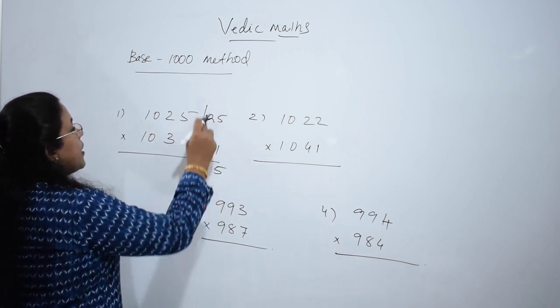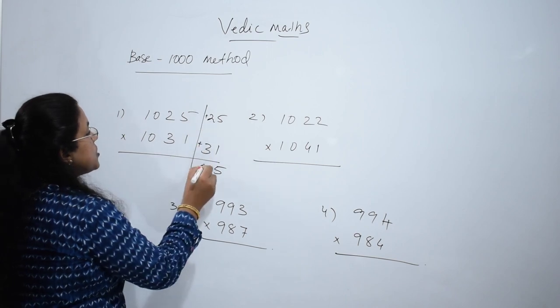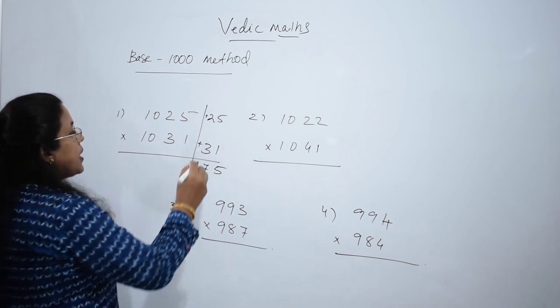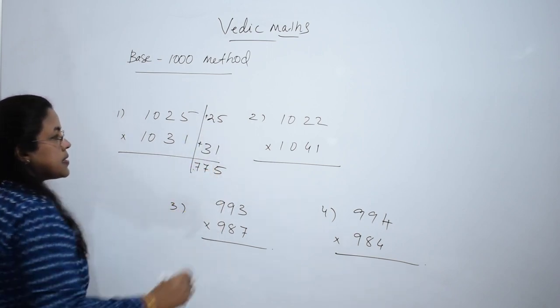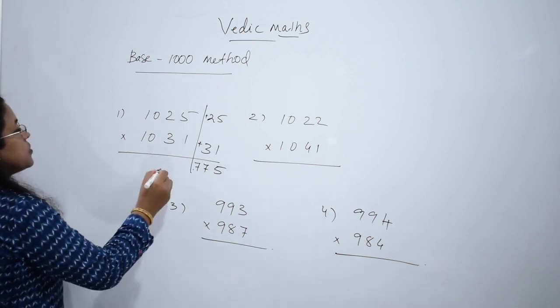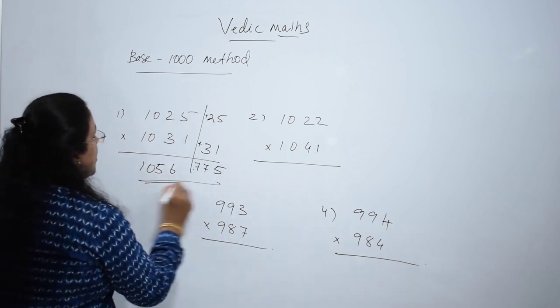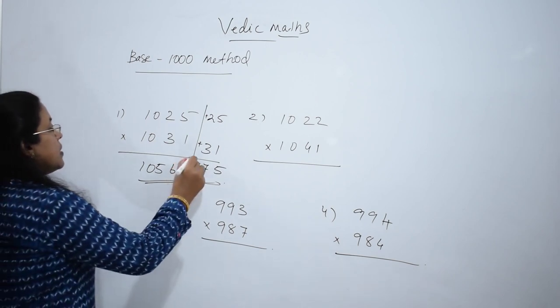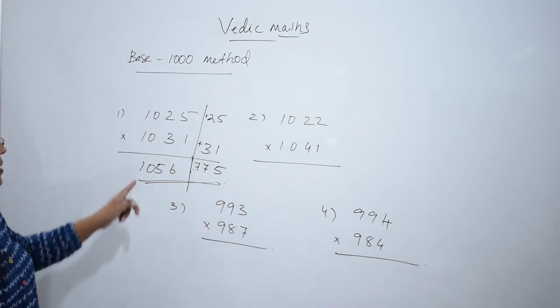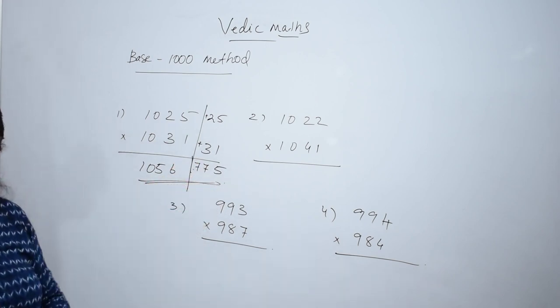5 times 1 is 5, 5 times 3 is 15 plus 2 is 17, carry over 1, 3 times 2 is 6 plus 1 is 7, so 775. Add the two: it is 1056775.